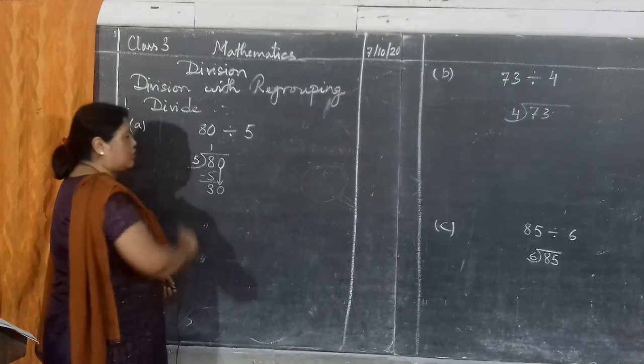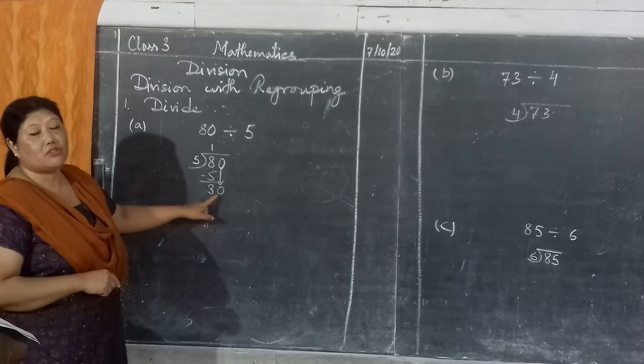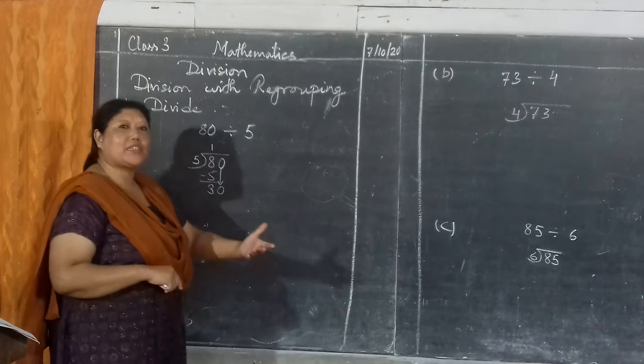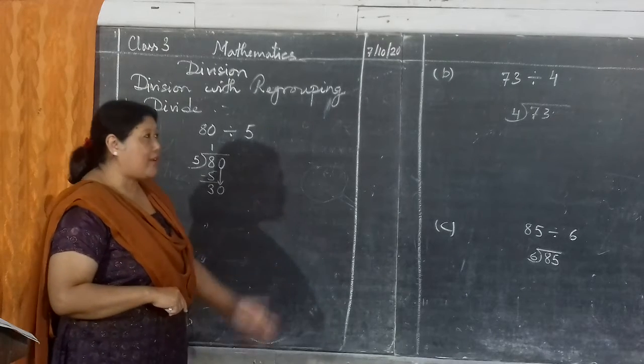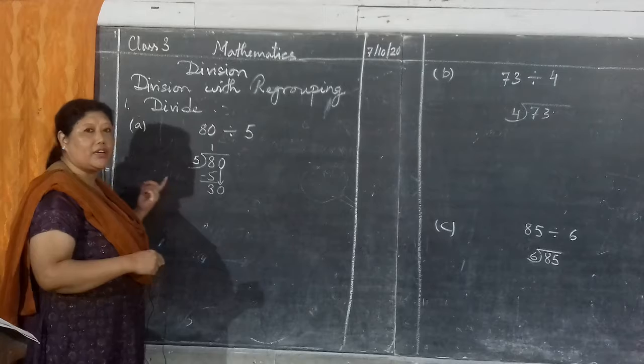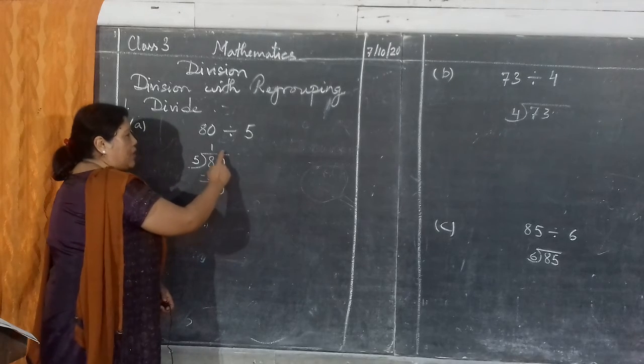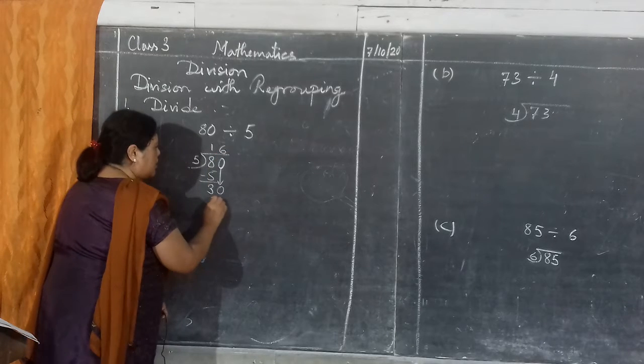Now your dividend became 30. So 30 divided by 5: 5 ones are 5, 5 twos are 10, 5 threes are 15, 5 fours are 20, 5 fives are 25, 5 sixes are 30. So just above this number at once place here, you have to write the answer. 5 sixes are 30.